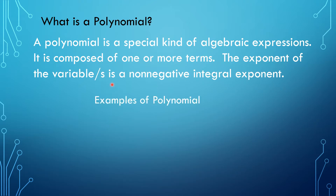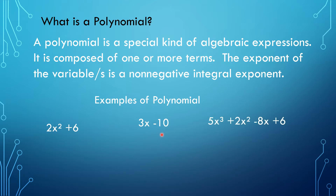I have here examples of polynomials. So I have 2x squared plus 6 — that is a binomial because it is composed of two terms. We have 3x minus 10, that is also a binomial. And I have here one with 4 terms — that is just called a polynomial. So a plus b plus c, this is a trinomial — one, two, and three terms. And negative 3x is simply a monomial, one term.